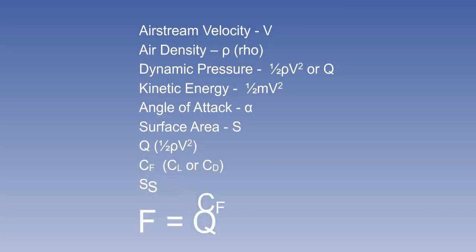The relationship of these three factors is expressed in the equation F equals Q times C_F times S, where F is the aerodynamic force either lift or drag, Q is the dynamic pressure half rho V squared, C_F is the coefficient of aerodynamic force, and S is the surface area.